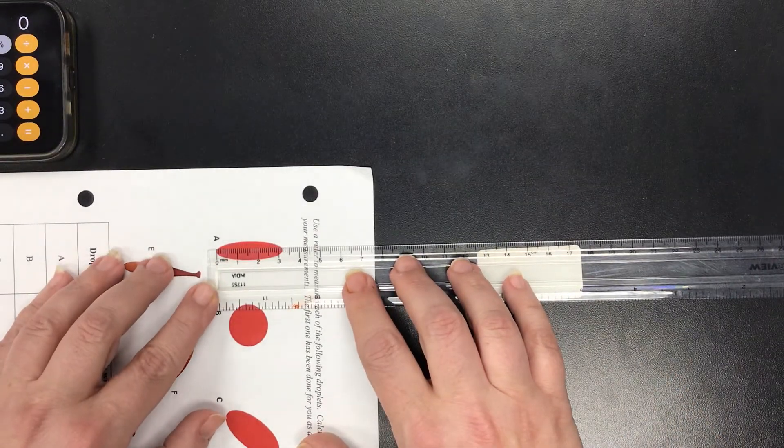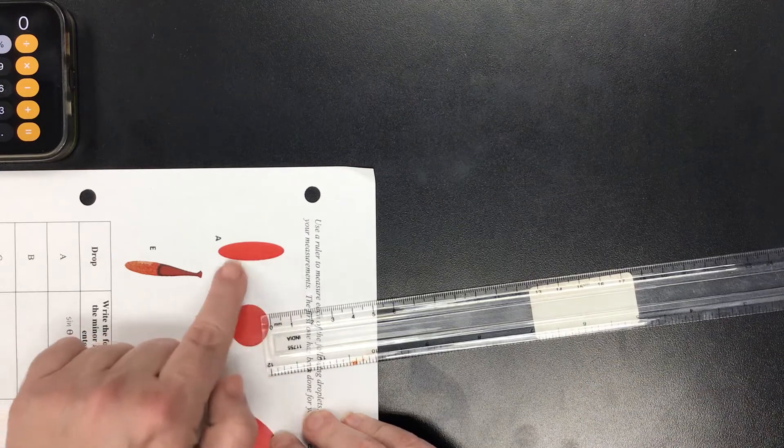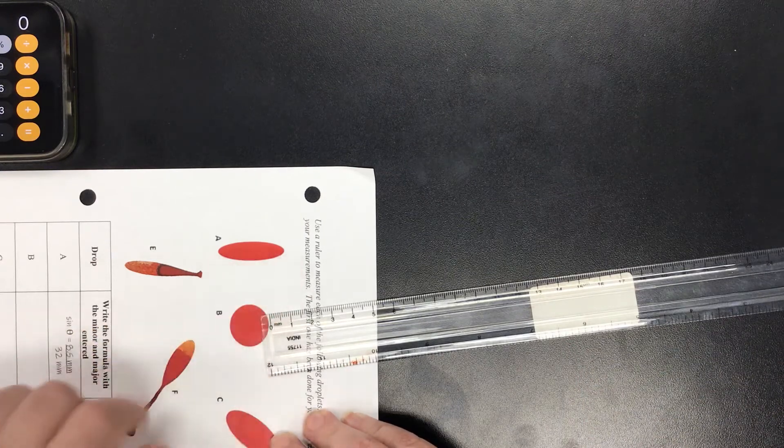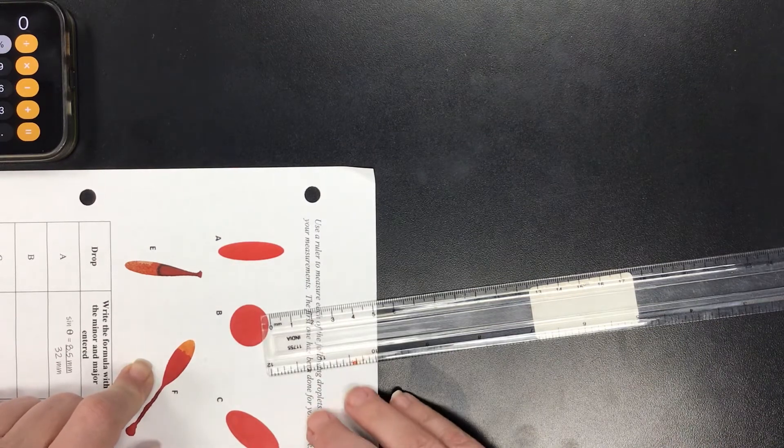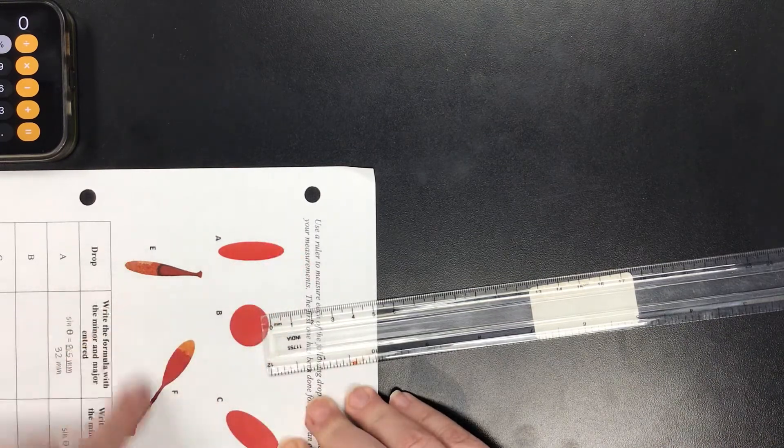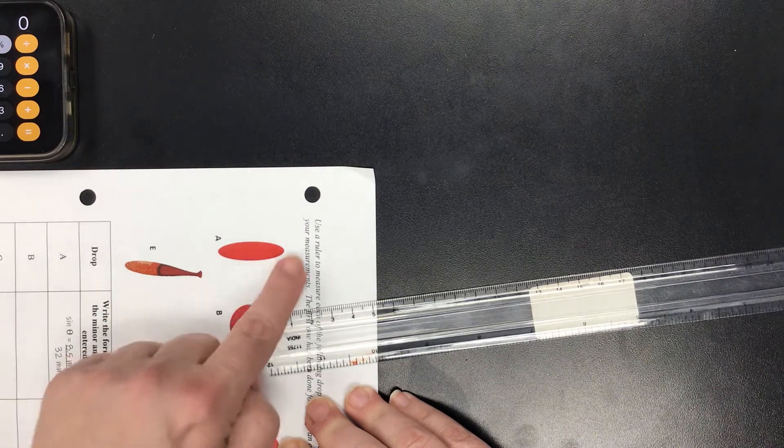The first thing I want to comment is I have a symmetrical blood drop here, so this is a nice perfect ellipse. Your first four are really easy because they are perfect. The other ones are not as perfect and they're going to be a little trickier.